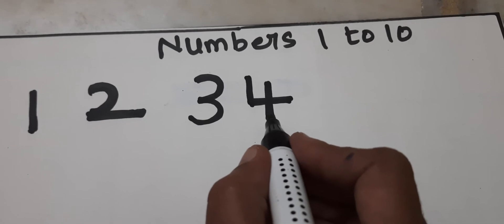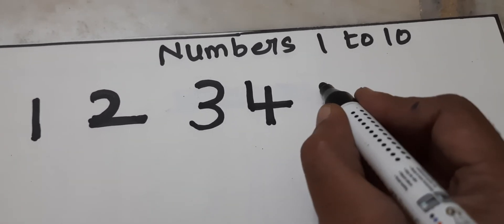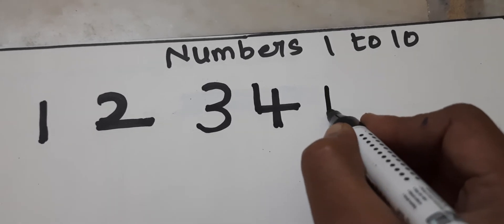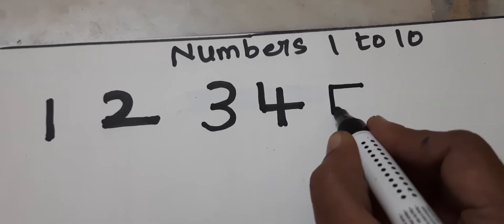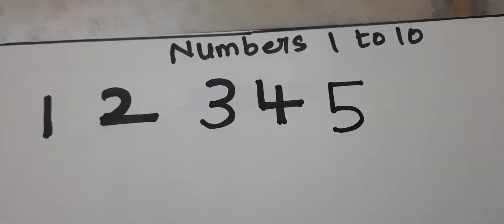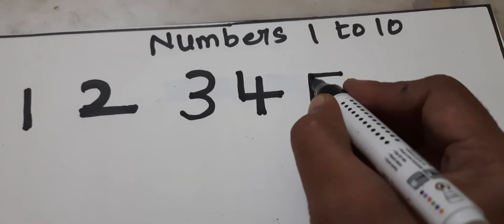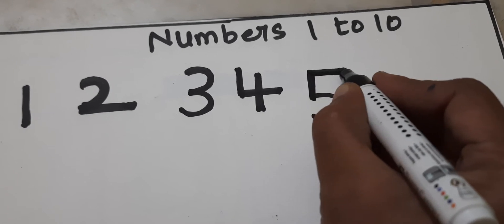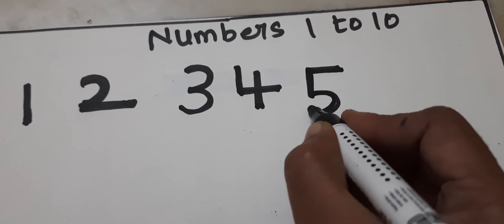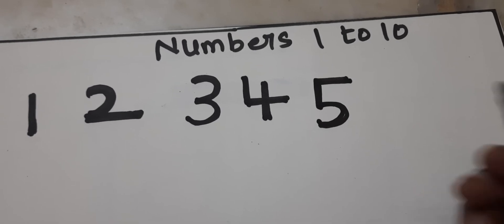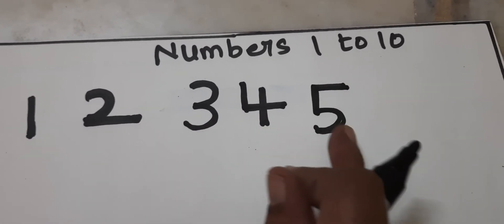After 4 comes 5. How to write 5? Standing line — 1, 2, 3, 4, 5. Then 1, 2, 3, 4, 5.